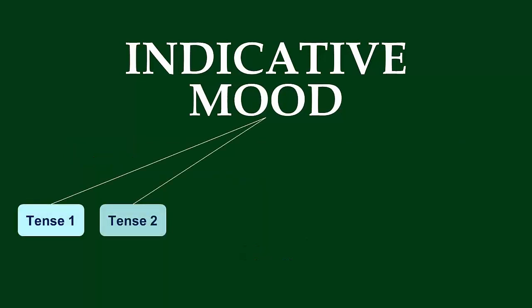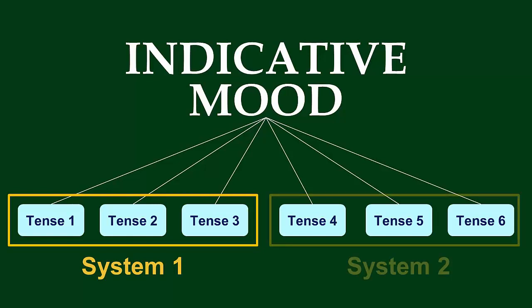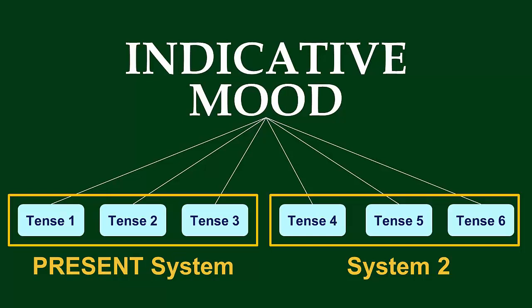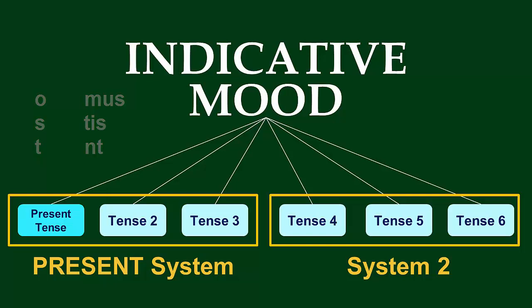In Latin, there are six tenses in the indicative. They are split into two systems based on the type of stem they use, with three tenses in each system. In the upcoming few lessons, we are going to be looking at the tenses of the present system. Now, you've already learned the present tense. You formed it by first finding your present stem — go to the second principal part, drop the -re — and then adding the present tense endings: o, s, t, mus, tis, nt. The present system, as opposed to the present tense, refers to the group of three tenses that use the present stem found by going to the second principal part and chopping off the -re. The three tenses included are the present, the imperfect, and the future.